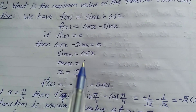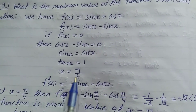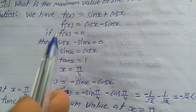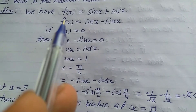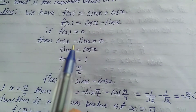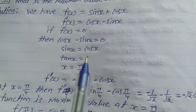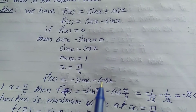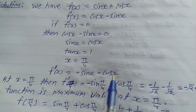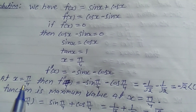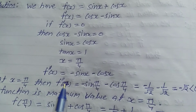This critical point is found to determine whether the function has a maximum or minimum value. The condition f'(x) = 0 is applied, and we differentiate f'(x) again with respect to x. So f''(x) is equal to minus sin x minus cos x.